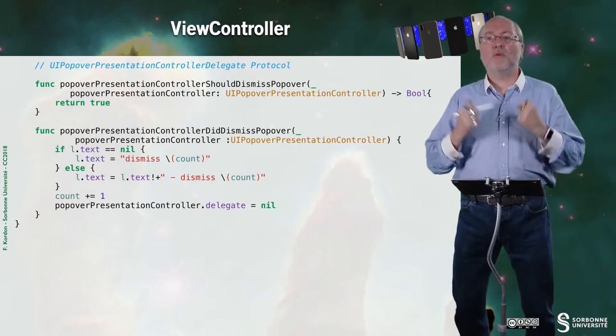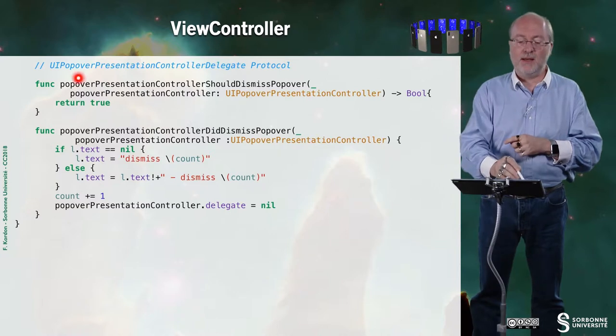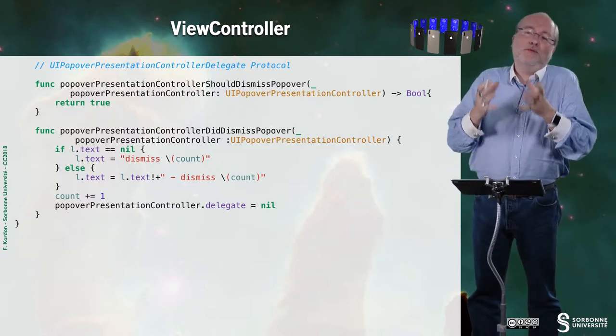And now, I want to answer to the popover presentation controller delegate protocol. Here, this is the default implementation. I'll just show you. I return true. If I return false, then on my applications, I would never be able to dismiss.